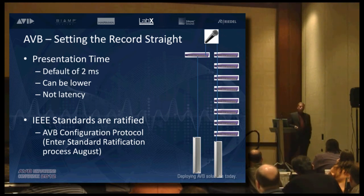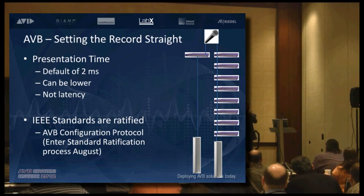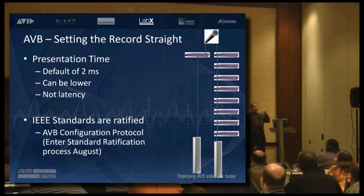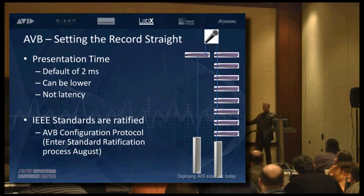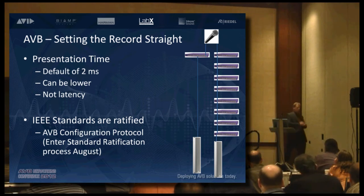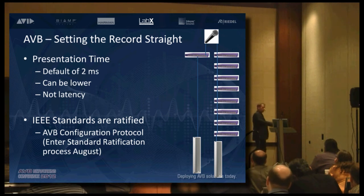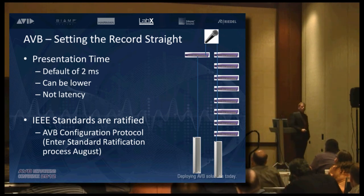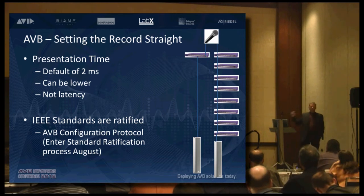When are these standards ever going to be done? Presentation time: ratified standard. Shaping: ratified standard. Stream reservation protocol: ratified standard. The data formats: ratified standard. These are IEEE standards that have been lumped into mainstream Ethernet, mostly part of the Q spec. There is one — the AVB configuration protocol, officially 1722.1 — which is just about to go into the ratification process; we're anticipating August. We're 80% in the bag with line of sight for the last one.